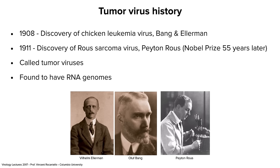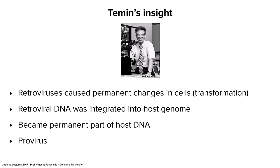These were eventually called tumor viruses, the agents of these two cancers. They were eventually found to have RNA genomes. A young virologist called Howard Temin, working at the University of Wisconsin in Madison, made amazing insights into RNA viruses causing tumors — let's call it transformation of cells, changing their properties.